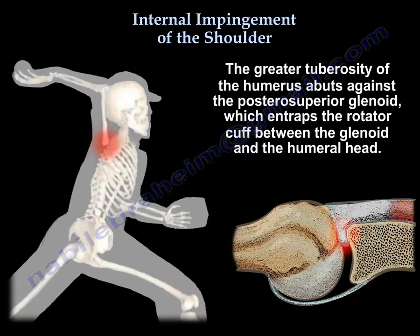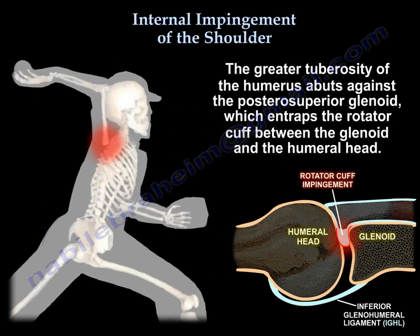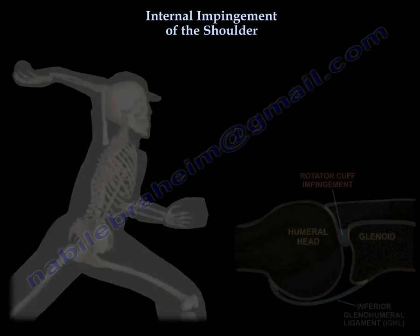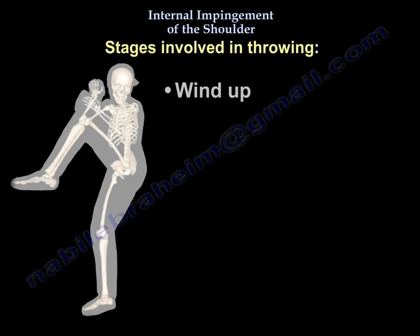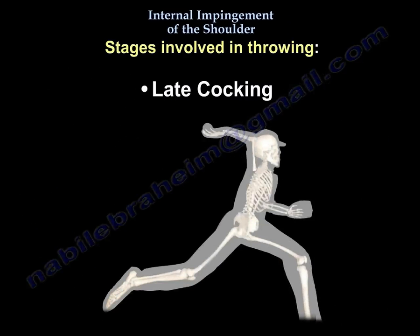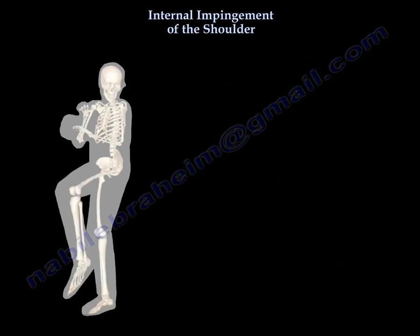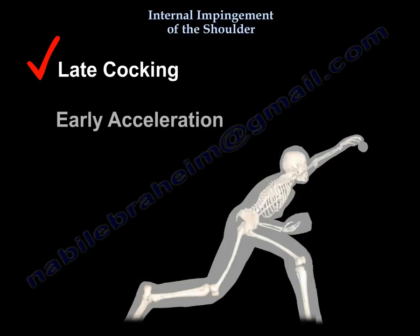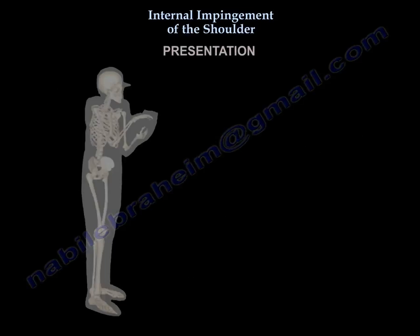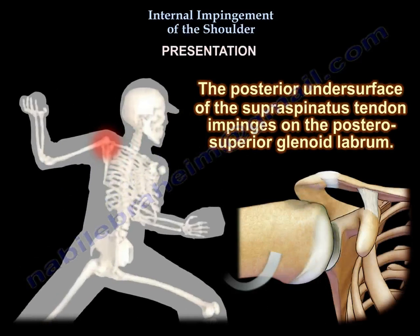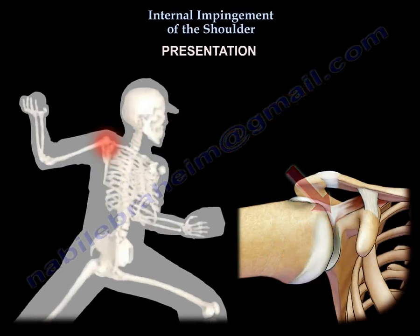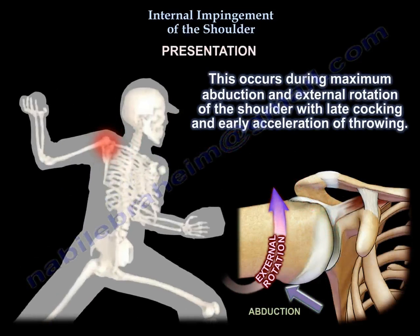The greater tuberosity of the humerus abuts against the posterior superior glenoid, which entraps the rotator cuff between the glenoid and the humeral head. The stages of throwing are: wind-up, early cocking, late cocking, acceleration, and follow-through. Internal impingement occurs during late cocking and early acceleration, when the posterior undersurface of the supraspinatus tendon impinges on the posterior glenoid labrum.